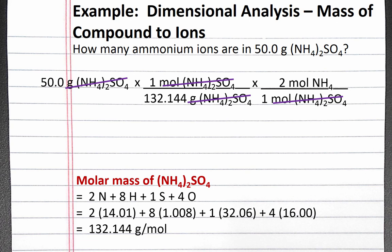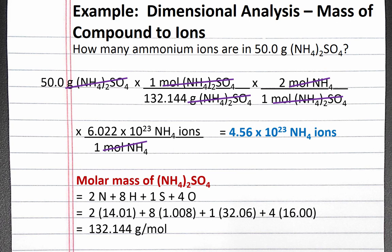we can convert from moles of ammonium ions to number of ammonium ions using Avogadro's number. In 1 mole of ammonium ions, we have 6.022 times 10 to the 23rd ammonium ions. Completing this calculation, we should get 4.56 times 10 to the 23rd ammonium ions.